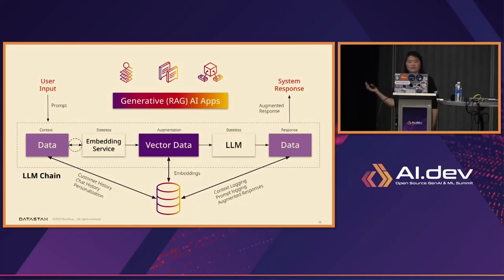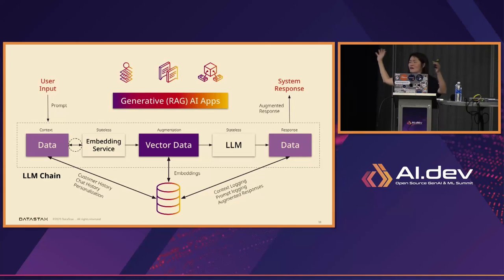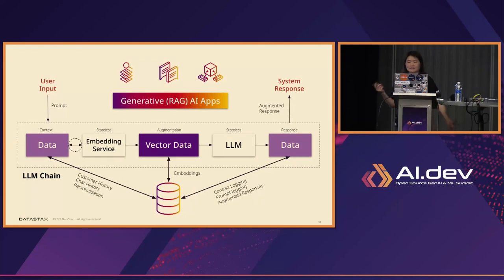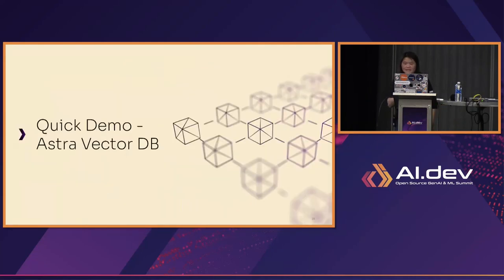This is a quick diagram to show how in a typical Gen AI RAG-based application, vector data can be represented — showing how the database has become very important. You need storage to store the data, so it's very important to have a database that can handle storage efficiently and allow it to be queried very efficiently. With DataStax, our database can handle the job very well.